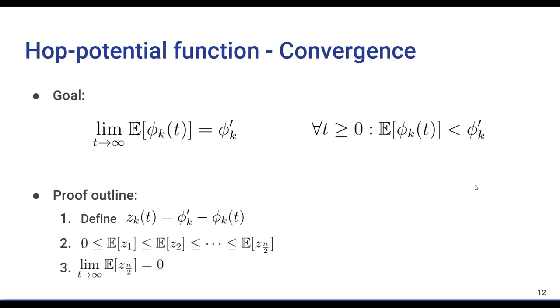Then, we prove that z_k at time t are in an increasing order and are all positive as well, meaning that 0 is less than the expected value of z1 at time t, which is also less than the expected value of z2 at time t, and so on. This will prove our second statement.